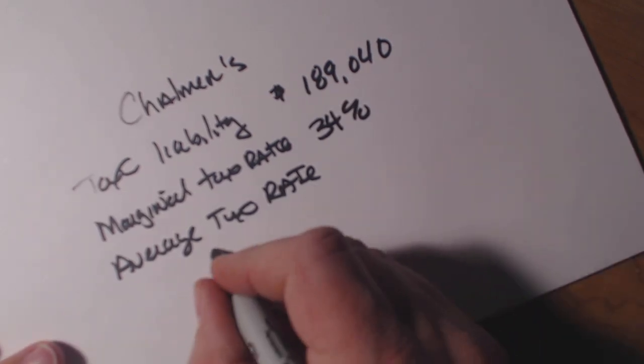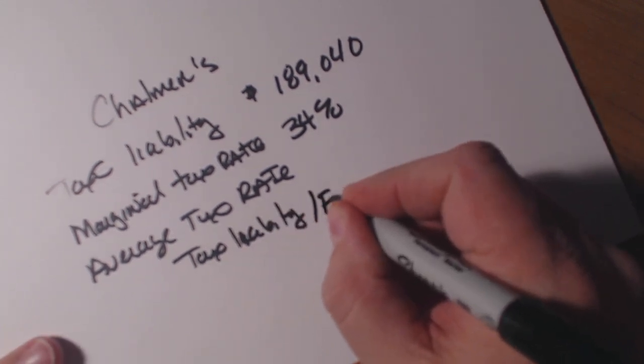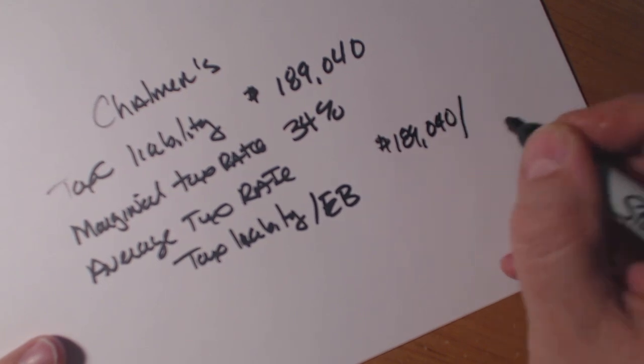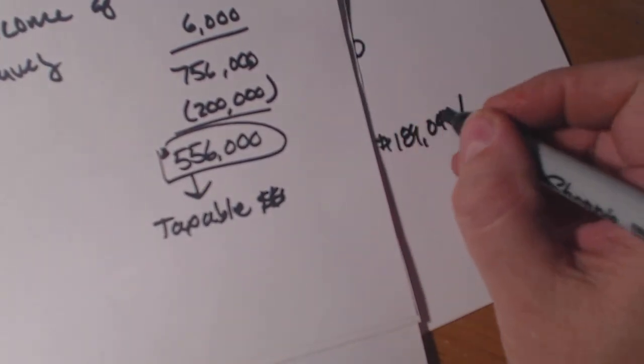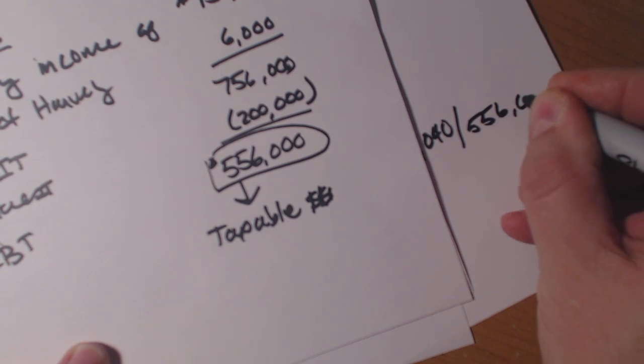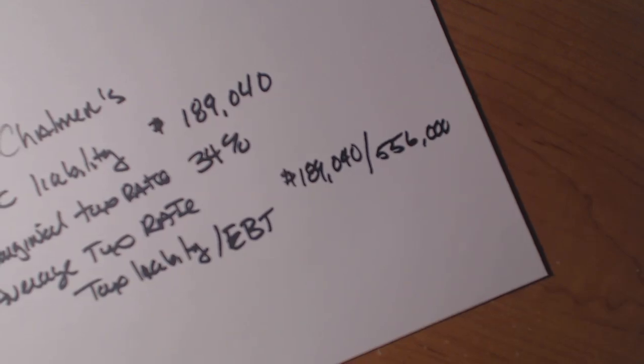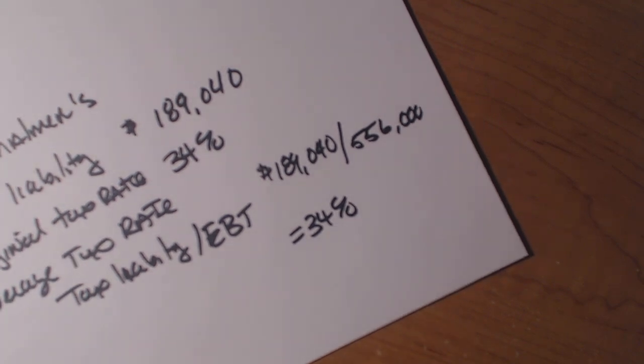So what we're going to do is we're going to take our tax liability and then we're going to divide it by the EBT. So we're going to take $189,040 and we're going to divide it by the EBT. Now that's the earnings before taxes. That is the number $556,000 even. So let's get the calculator up here. $189,000 divided by $556,000 comes out to be 34%. So our current average tax rate is 34%.